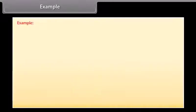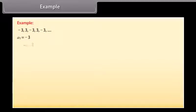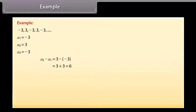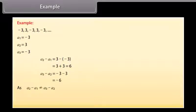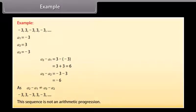Let us now solve some examples. Observe this sequence — we will find out whether these numbers form an AP or not. Here a1 is minus 3, a2 is 3, a3 is minus 3, and so on. Now, a2 minus a1 equals 3 minus (minus 3) equals 6. And a3 minus a2 equals minus 3 minus 3 equals minus 6. Since a2 minus a1 is not equal to a3 minus a2, the given sequence is not an arithmetic progression.